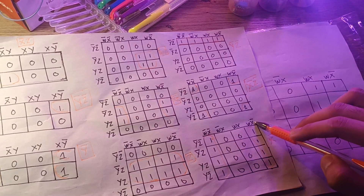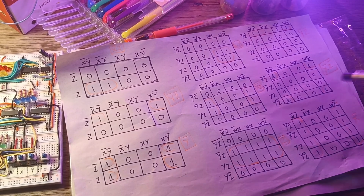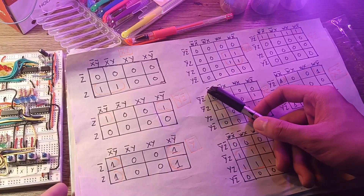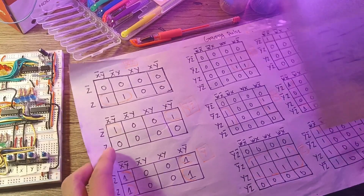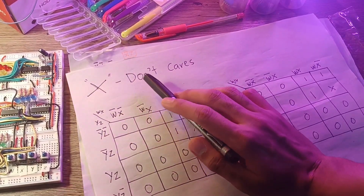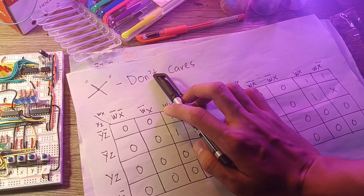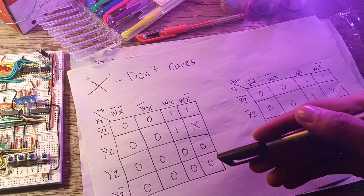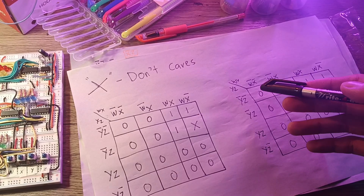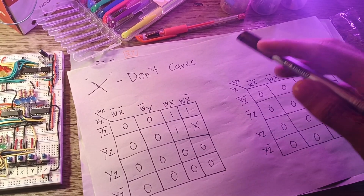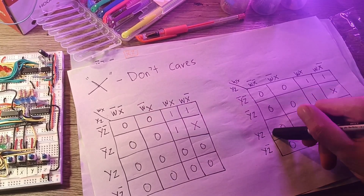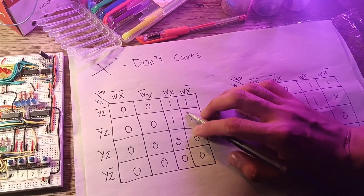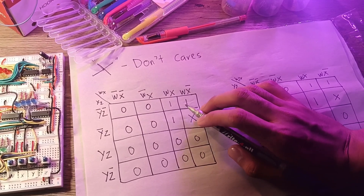One important thing to mention is that in decoder design we will encounter don't cares. As the name suggests, we don't care about them. This is a frequently encountered situation where certain outputs are not specified in a problem — such outputs are called don't cares. The designer does not care what the outputs are for those particular inputs.